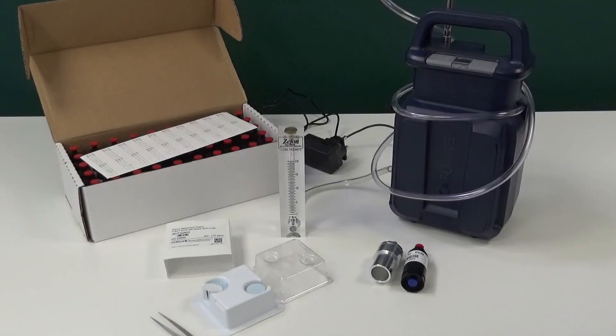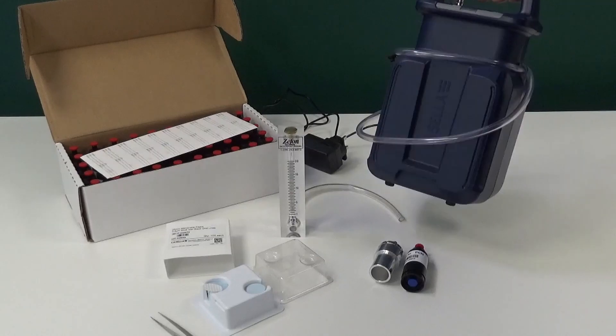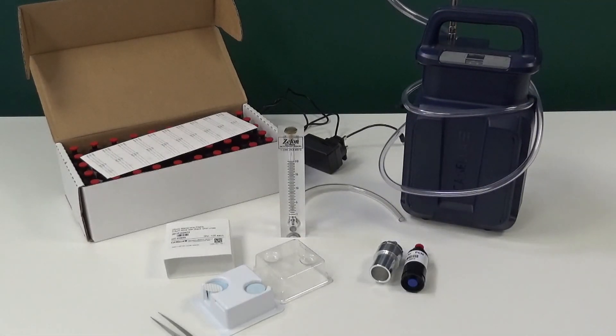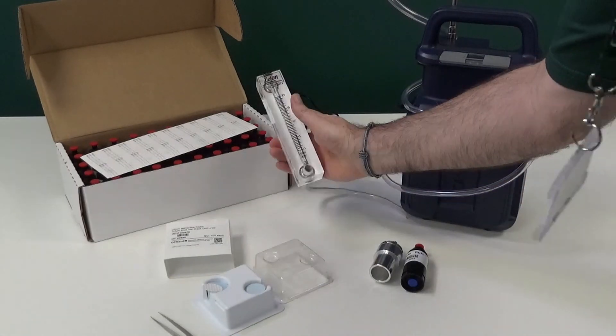The parts required are the Vortex 3 high flow air sampling pump, which has a flow rate between 5 and 12 litres per minute and a maximum run time of 2.5 hours at 12 litres per minute and 4 hours at 8 litres per minute. A rotameter to confirm the calibration of the Vortex 3.